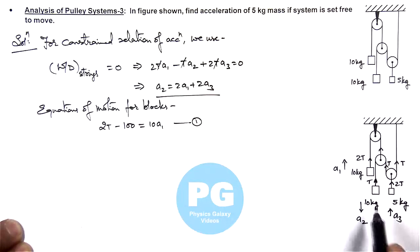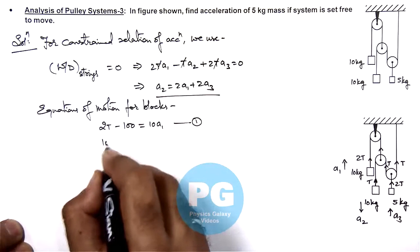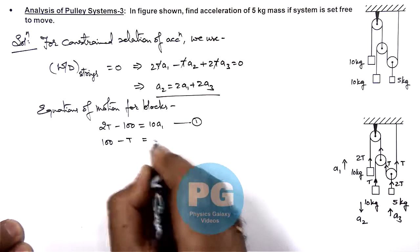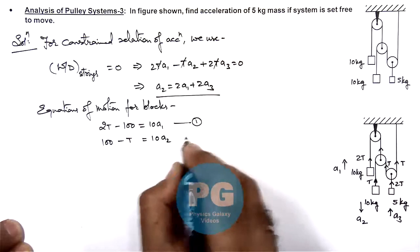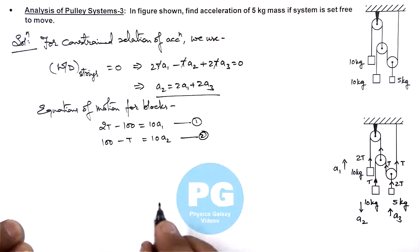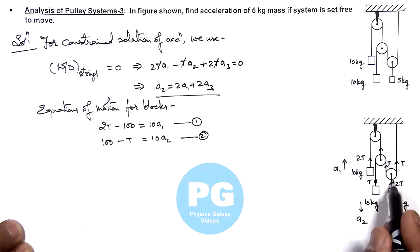For the second 10 kg block, as we have considered it to be going down, its weight minus tension we can take up, this hundred minus t is equal to 10 a2, that is our second equation.